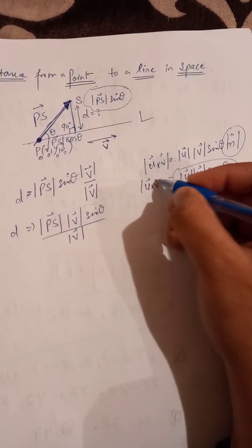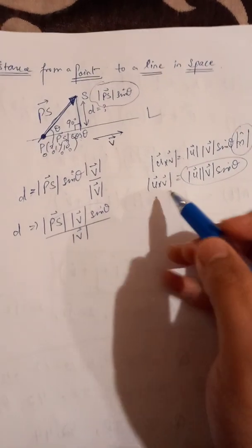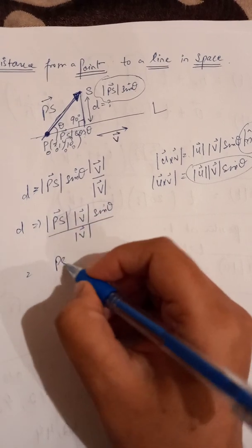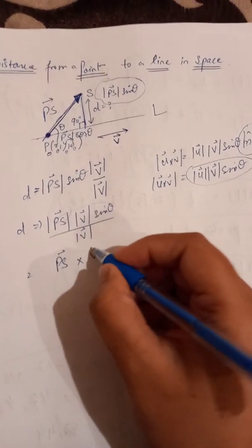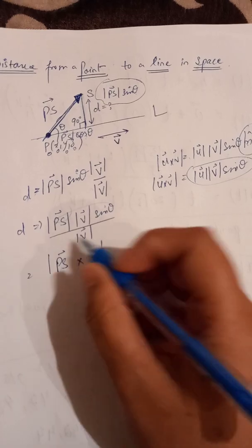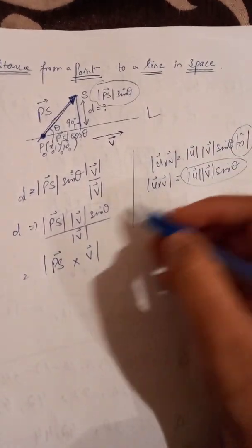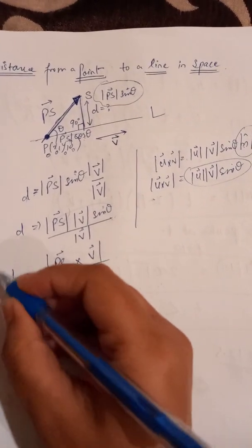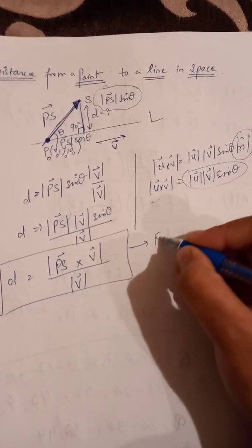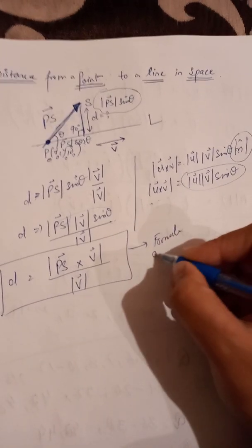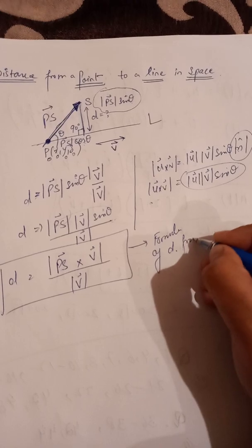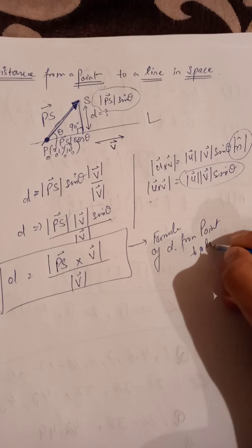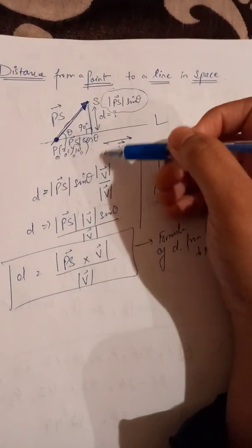Comparing these expressions, the numerator is the magnitude of the cross product of PS and v. So the formula for the distance from a point to a line is: d = |PS × v| / |v|.